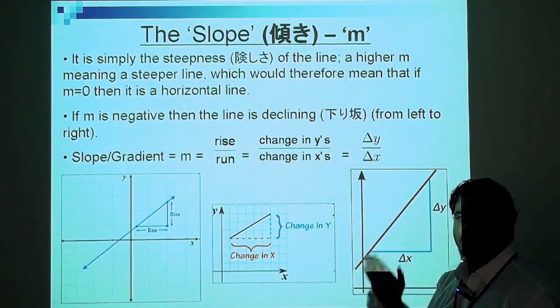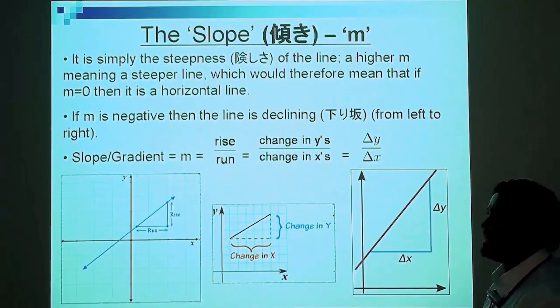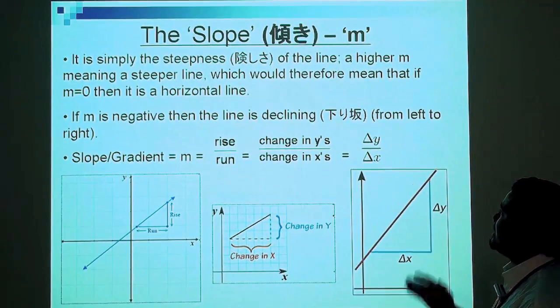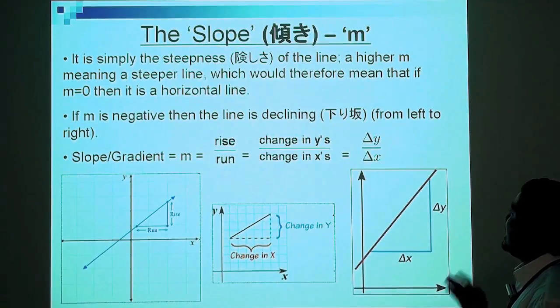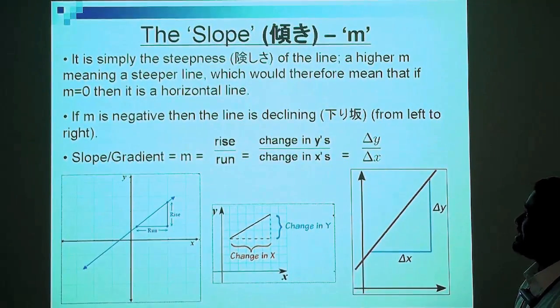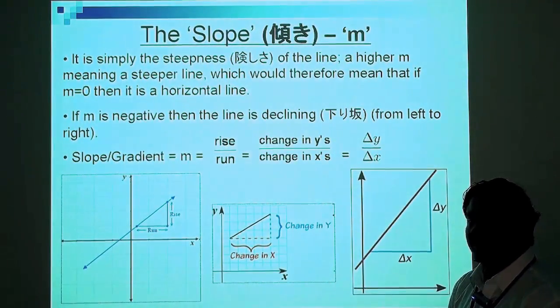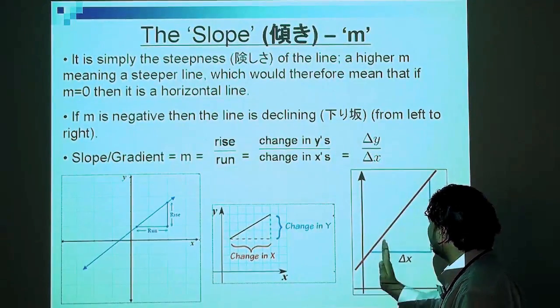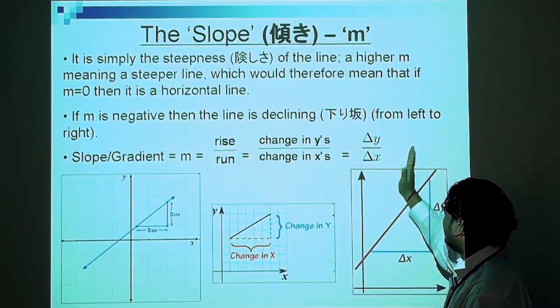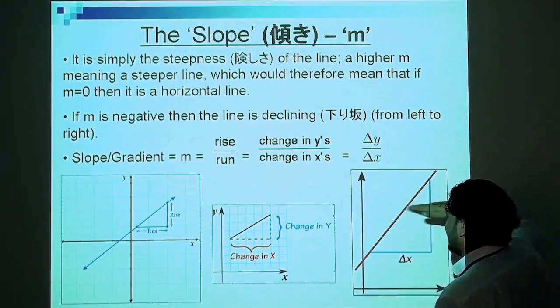Let's talk about the slope now, the slope or gradient, which commonly uses the variable m. It is simply the steepness of the line. A higher m meaning a steeper line, which would therefore mean that if m is 0, then it is a horizontal line. The higher the value of m, your line will look more like that. And as m approaches 0, it becomes flatter. If m equals 0, it'll be a straight line.